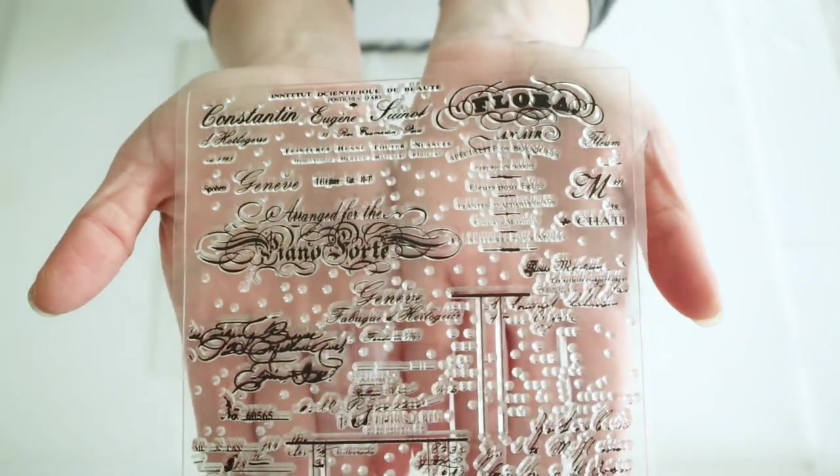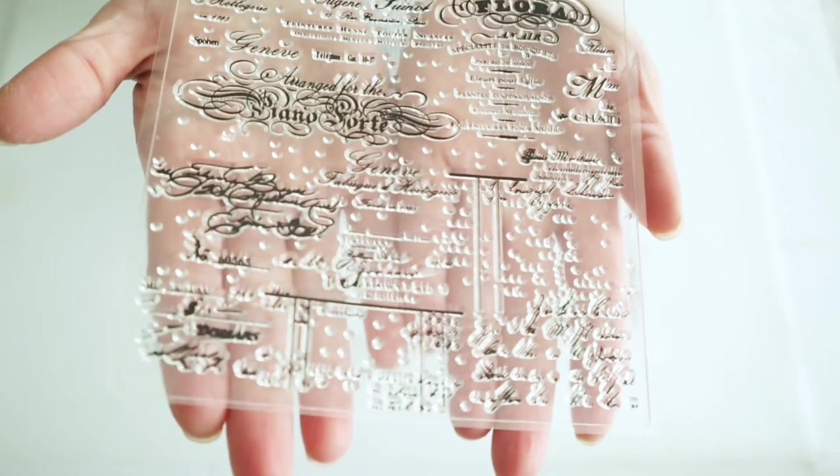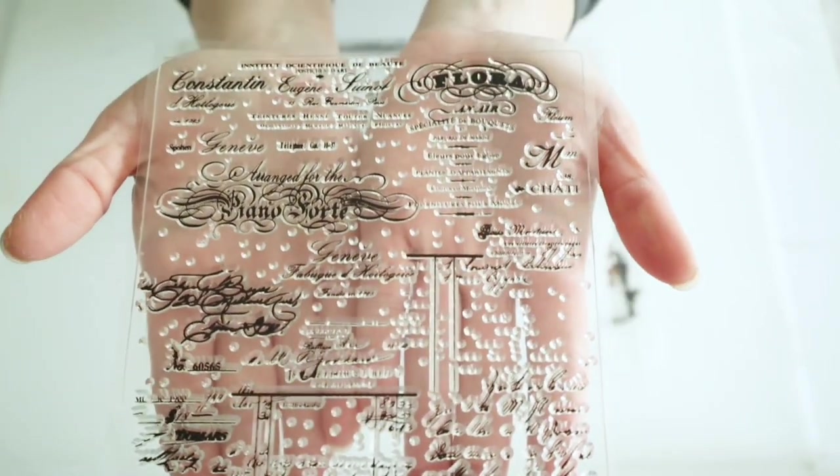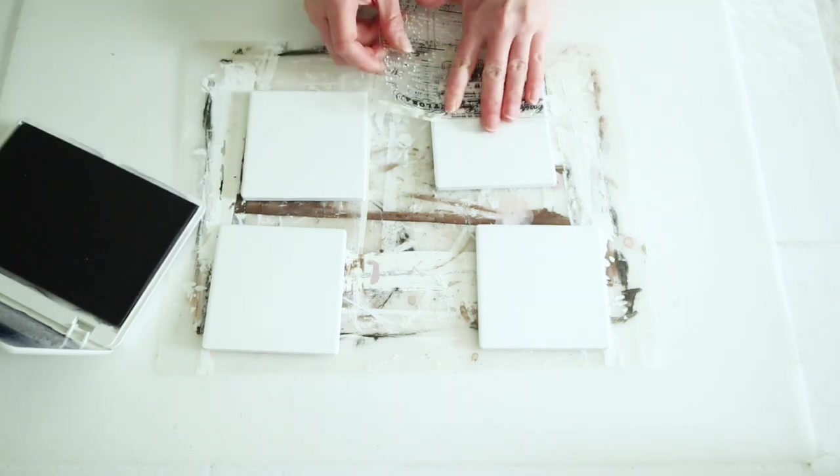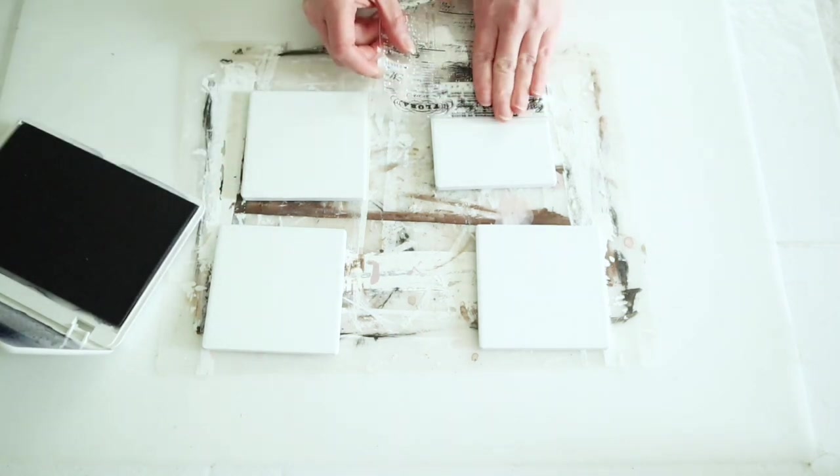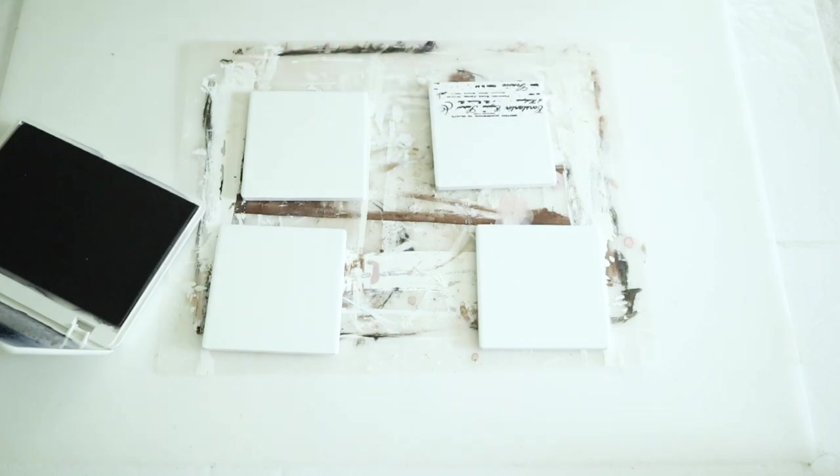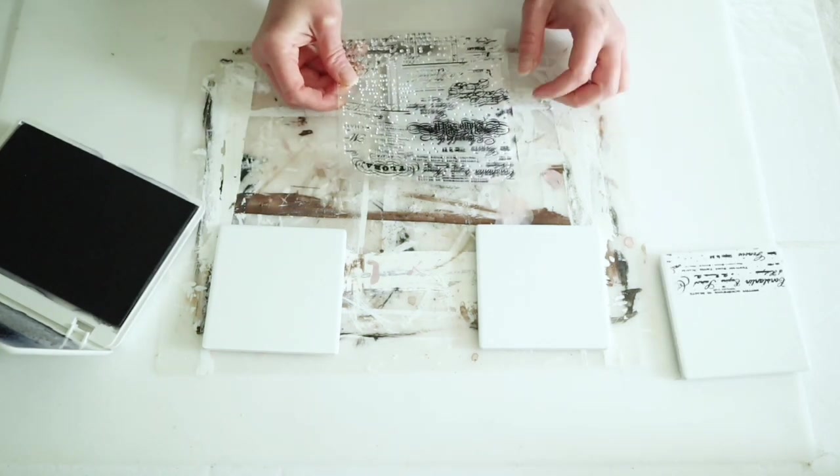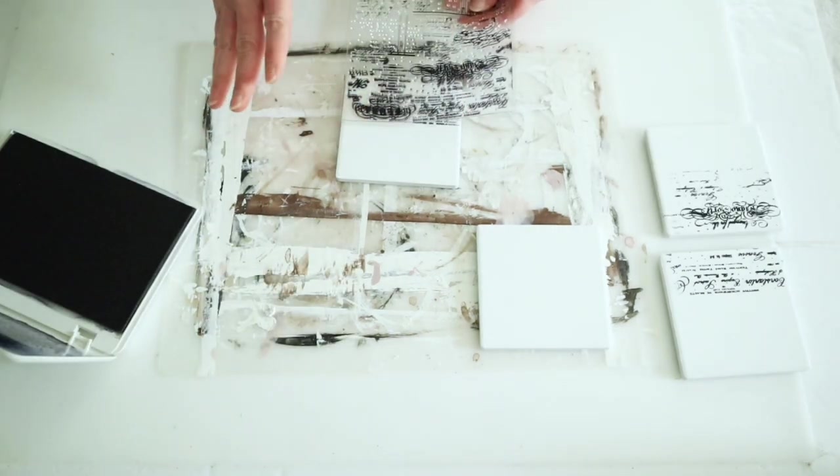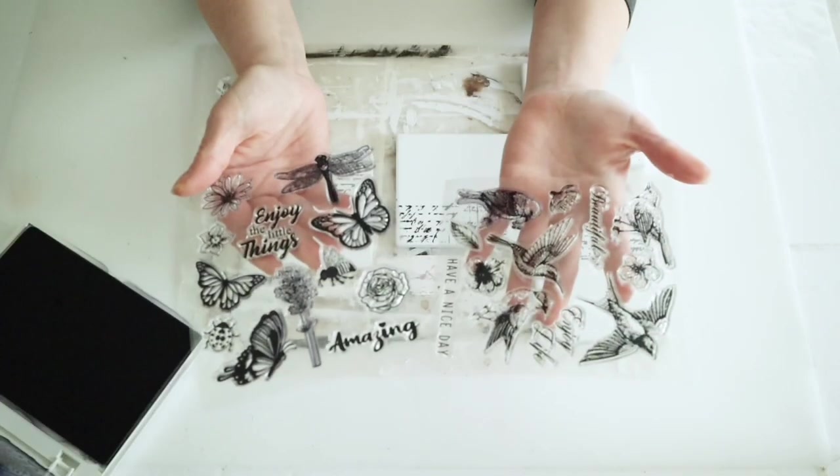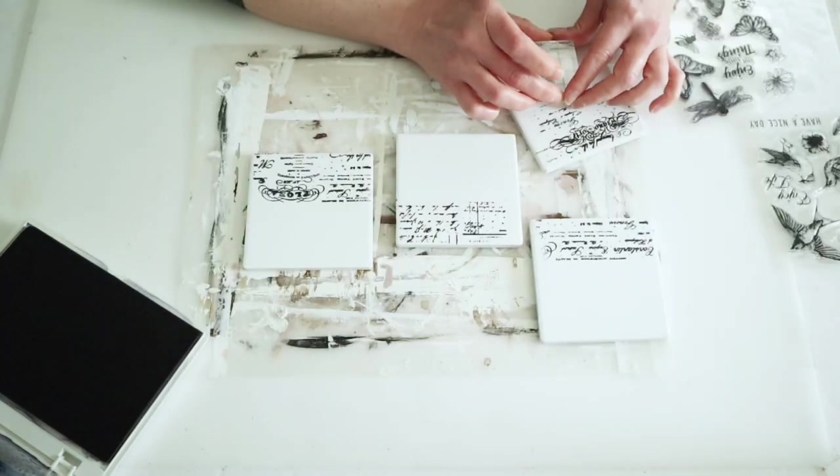For my coasters, I wanted to decorate them with some vintage spring. I have this pretty large stamp from Amazon, and I'm using different sections of this stamp on each of the coasters, pressing them in different areas.